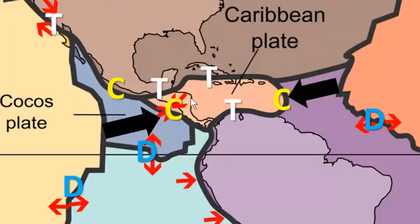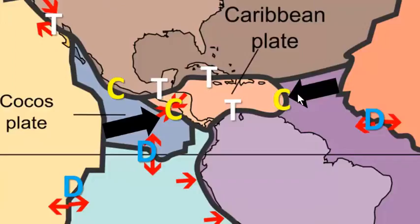Looking at the Caribbean plate, it's kind of half continental — we can see that in the Central American part — but also half oceanic. On the eastern side of the Caribbean plate we have convergence, which is what the yellow C indicates. What's happening there is an ocean plate essentially going underneath another ocean plate, thus creating an island arc. We're going to see that volcanic island arc wherever we see ocean-versus-ocean convergence.